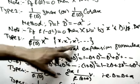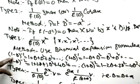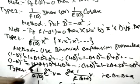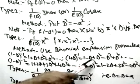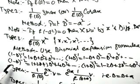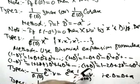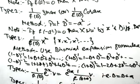Type 3 is for algebraic values like x, x², or x³. We use binomial theorem expansions. The key formulas are: (1−D)^(−1) = 1 + D + D² + D³ + ..., and (1+D)^(−2) = 1 − 2D + 3D² − 4D³ + ..., and (1−D)^(−2) = 1 + 2D + 3D² + 4D³ + ...